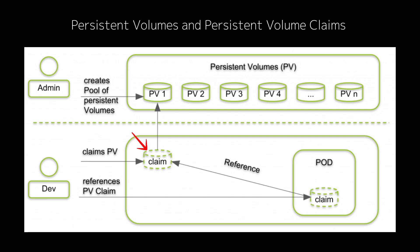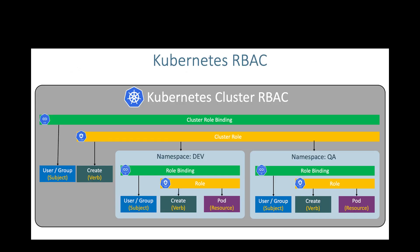Kubernetes then matches the Persistent Volume Claim with an available Persistent Volume, and the pod can mount the volume to store its data. Persistent Volumes and claims ensure that data is kept intact even if pods are restarted or rescheduled to a different node. This is very important for stateful applications like databases.